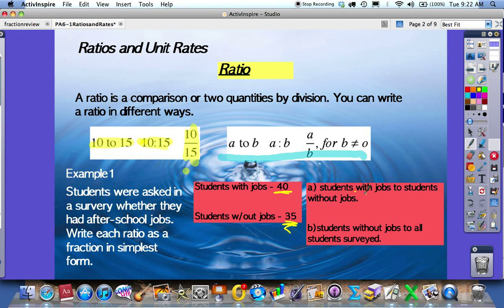We want students with jobs to students without. Sometimes before I write my ratio, I'll write the words first: with over without. So in this case, students with jobs was 40, students without jobs was 35. This is not in simplest form. Using my divisibility rules, I can see that both 40 and 35 can be divided by 5, which would be 8 over 7.